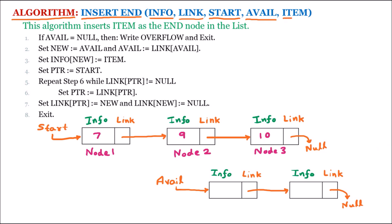The next element is item. Item is the element which we want to insert at the end of the linked list. Let us suppose that item is 19. This algorithm inserts item as the end node in the list, which means item 19 will be inserted at the end of the linked list.